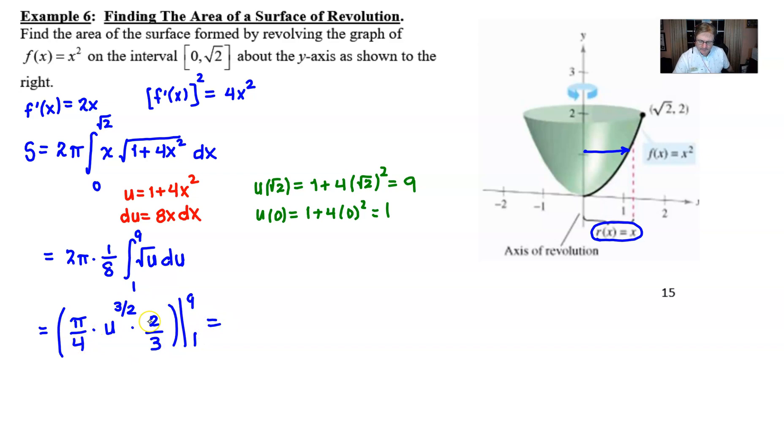If I do a bit of simplifying here, π/4 times two-thirds, I believe that would give me π/6 if I'm not mistaken. And then if I insert the 9 in for the u, I get 9 to the three-halves. And then if I subtract and insert 1 for the u, I get 1 to the three-halves. And something kind of interesting happens. For the first time, in several videos at least, we have a nice perfect square that we are raising to the three-halves power, which means you can square root the 9 cleanly to get a 3, cube it to get a 27, and we have a pretty number finally.